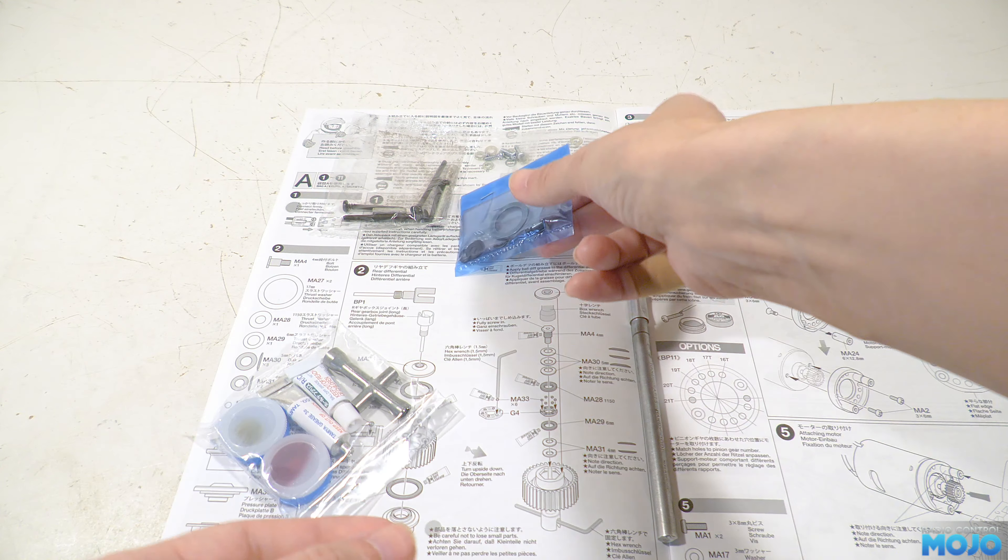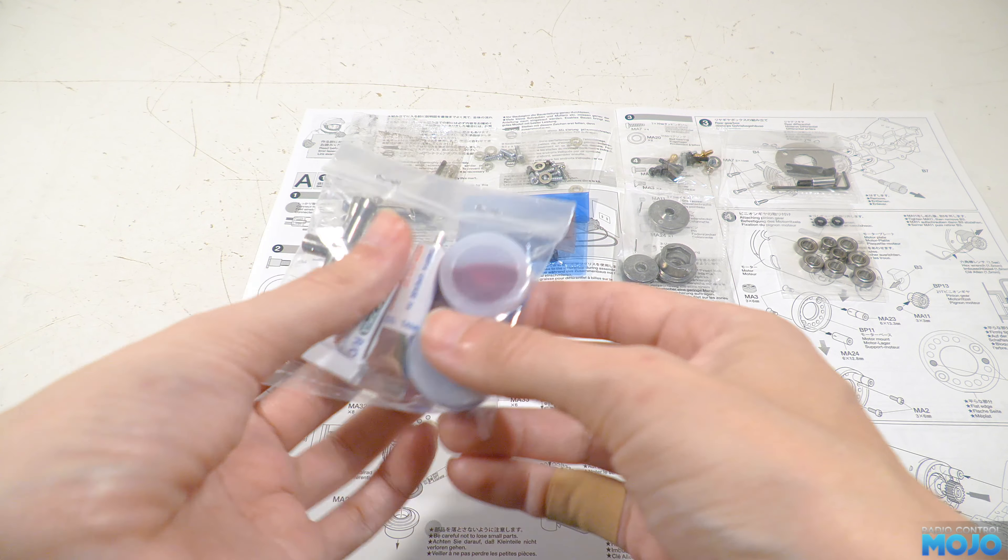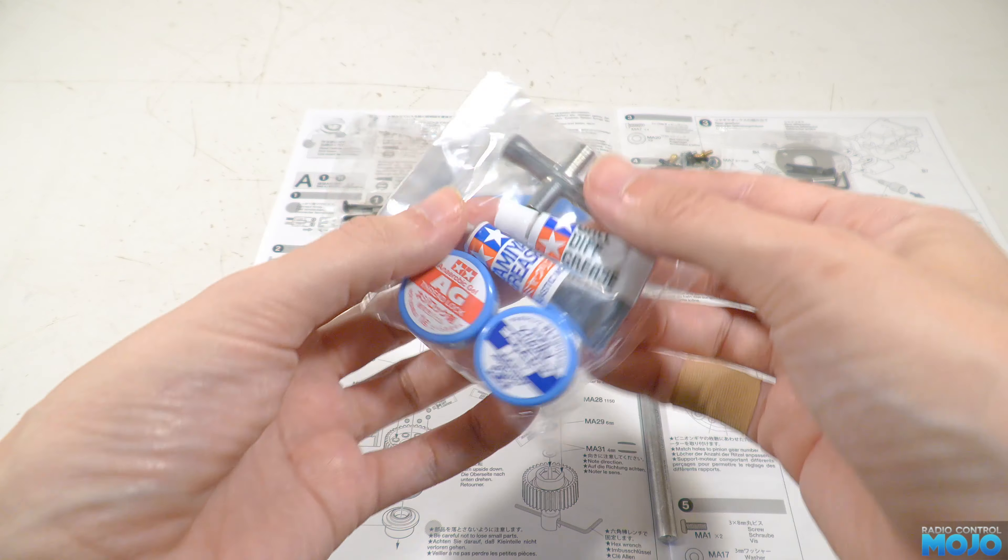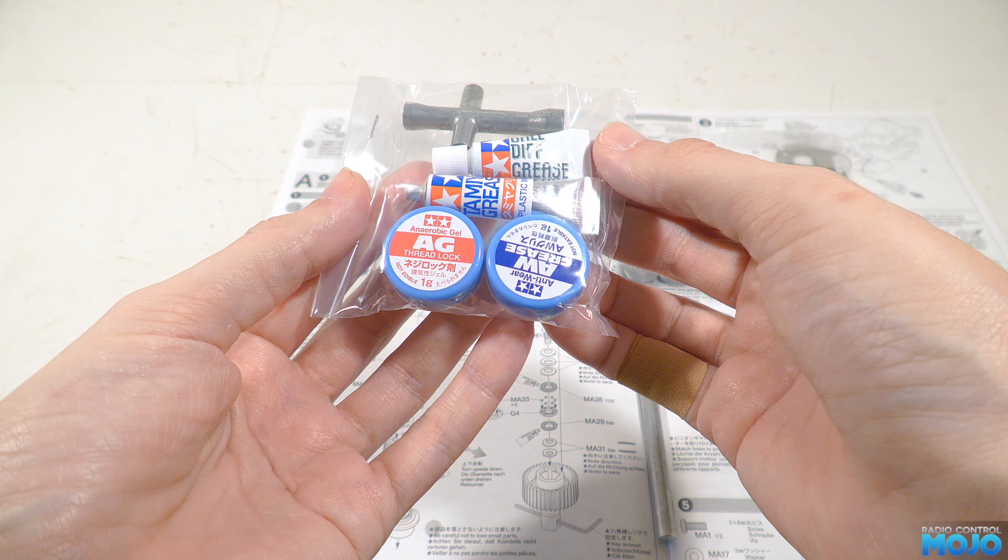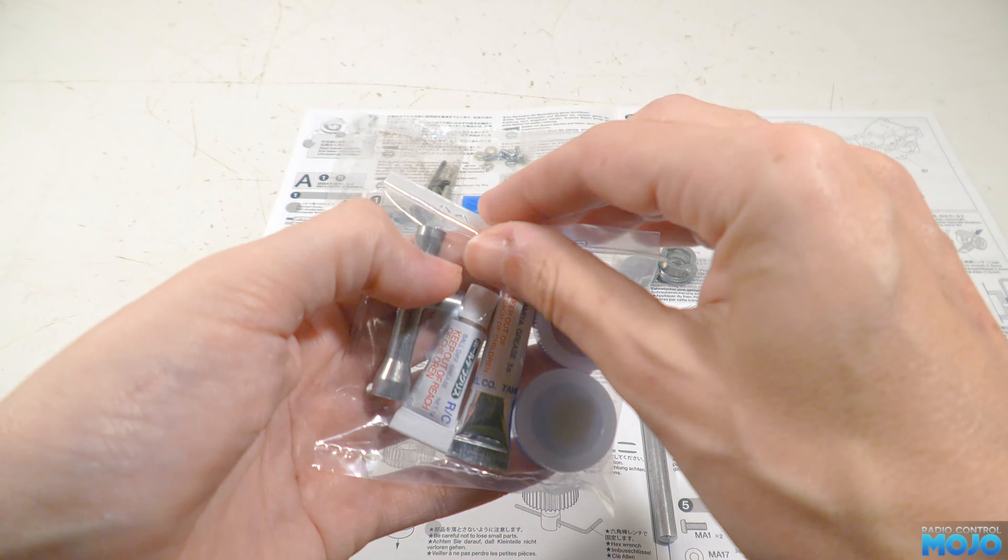And lastly we have the tools bag. There's some anti-wear grease, threadlock paste, special ball diff grease, some generic brown grease and of course the ubiquitous cross wrench.